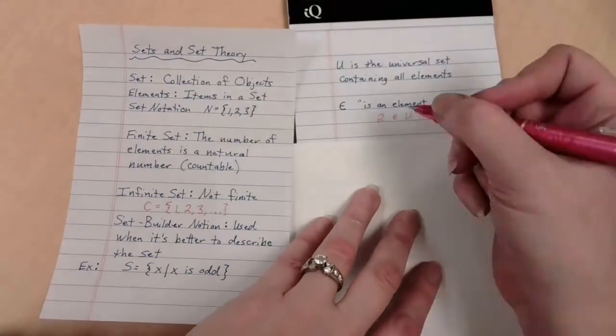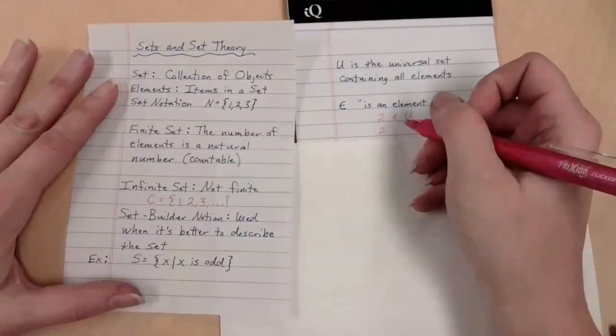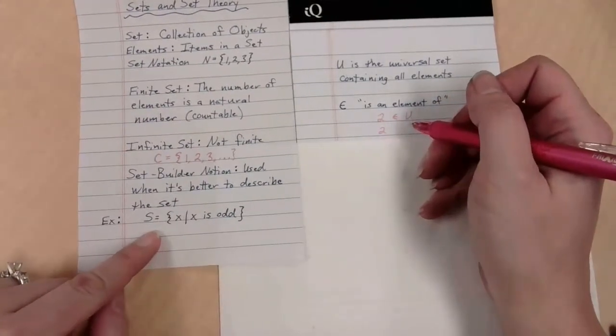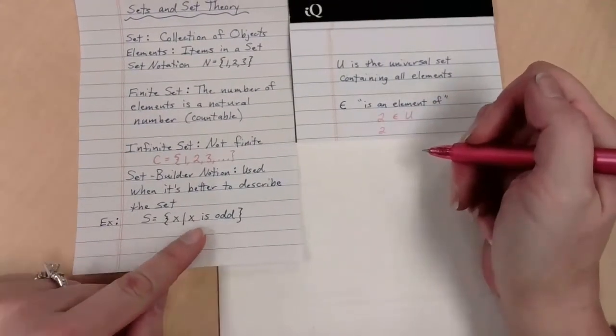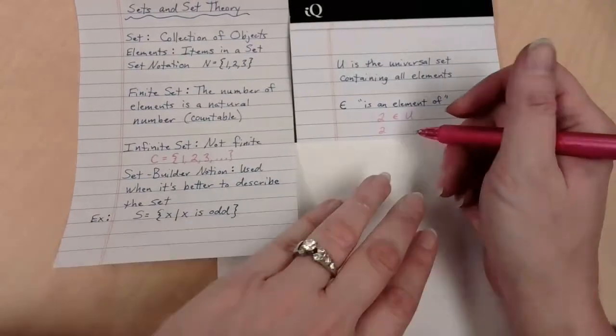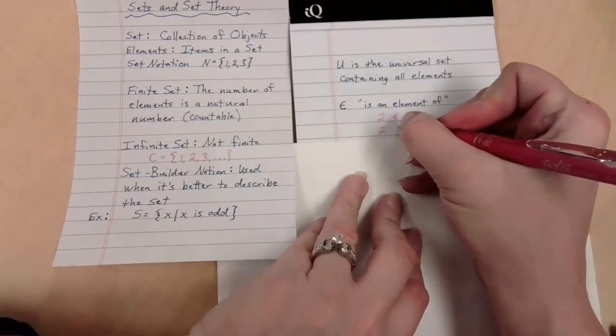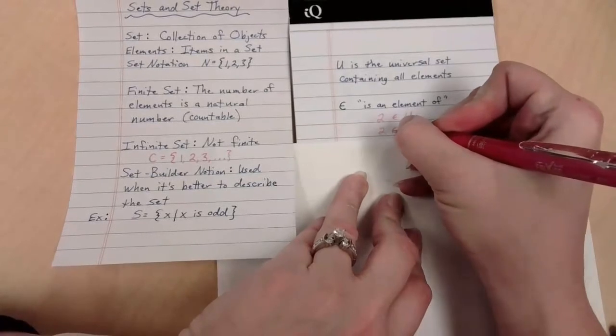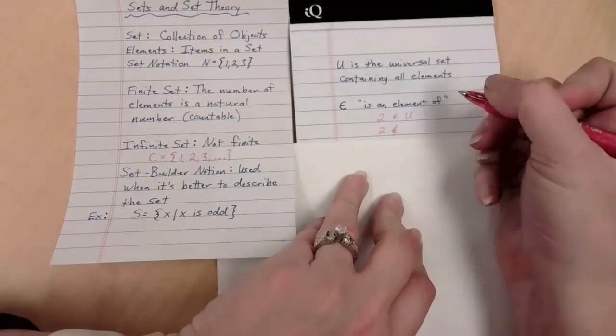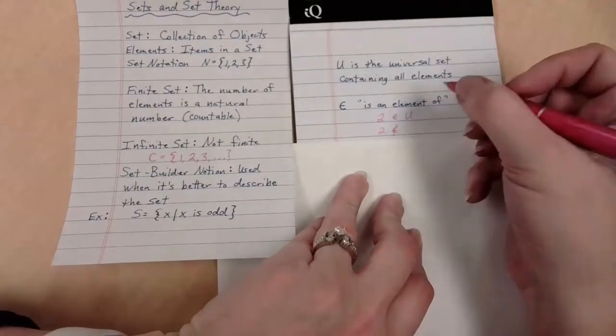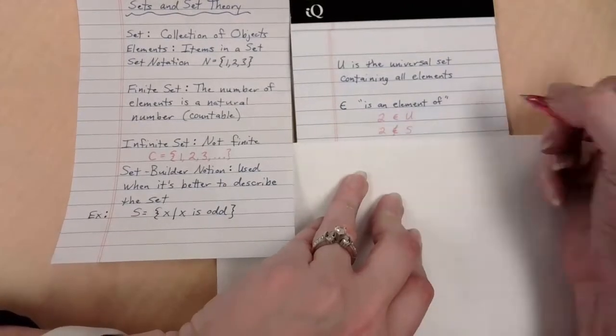However, if I want to talk about 2 and its membership with this set, set S, which says that everything, all of my x's are odd, 2 is not an odd number. So I still want to make the E thing, but I want to kind of cross it off in saying that 2 is not a member of set S.